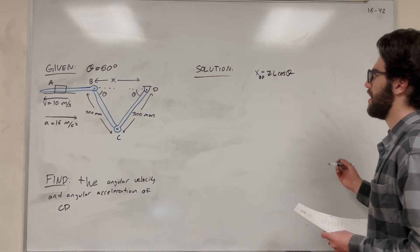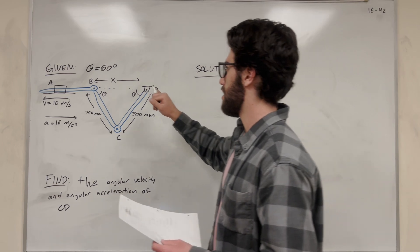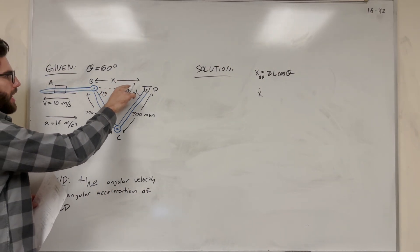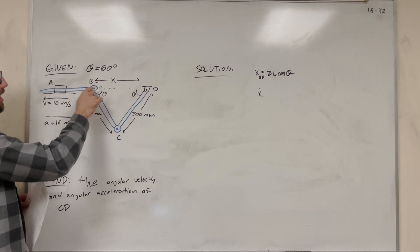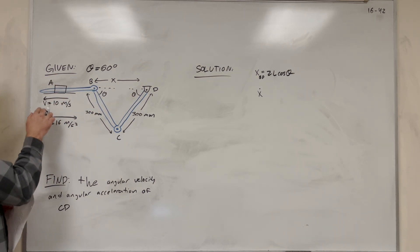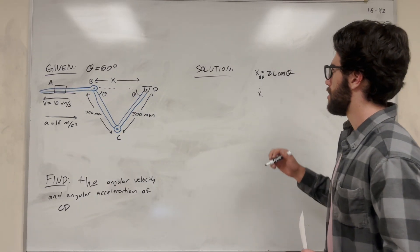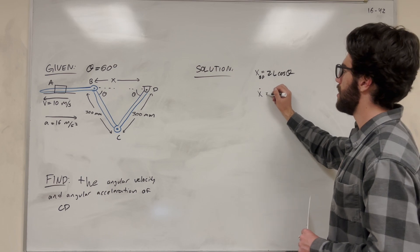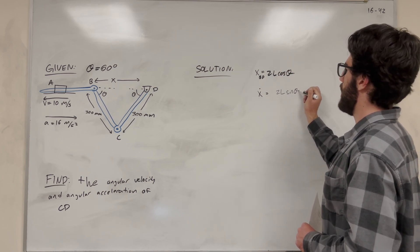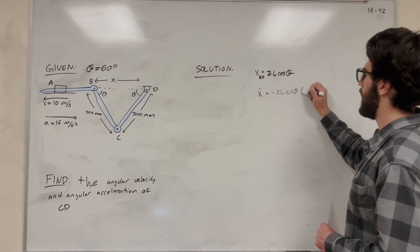What happens if we take the derivative of this? We get ẋ. ẋ is the rate of change of this length, and however much B and D get closer or further apart, it's going to be the same as the velocity of A. We know the velocity of A and the acceleration of A, so this is going to be really useful. Taking the time derivative, we get negative 2L sine of theta, and by chain rule we attach a θ̇.